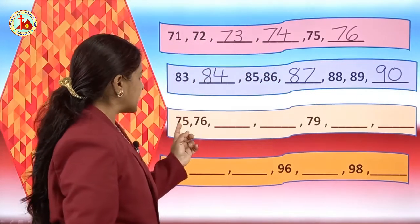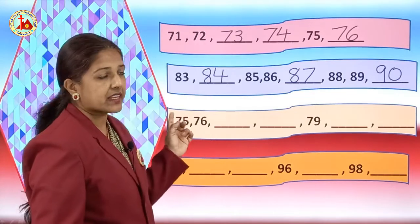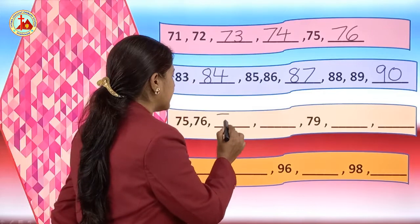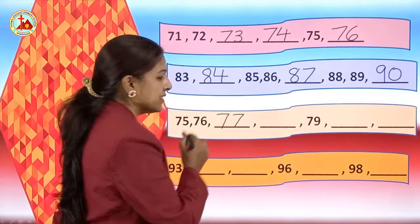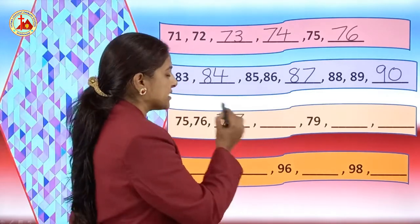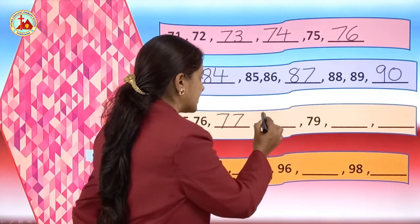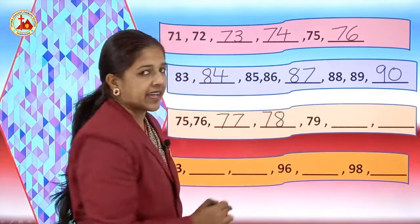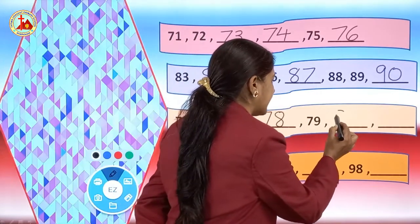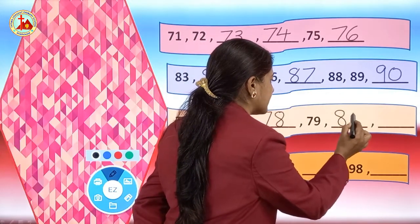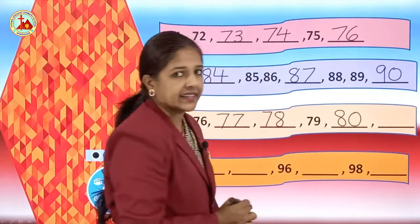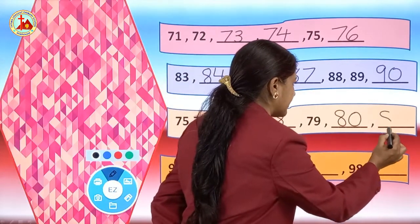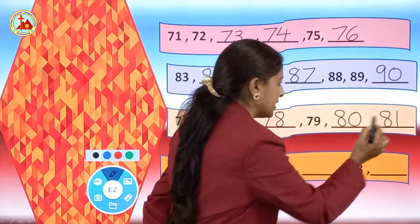Now on the next line, 75, 76. Then the missing number is 77. After 77, 78. 79 is written. After 79, missing number is 80. And after 80, 81.